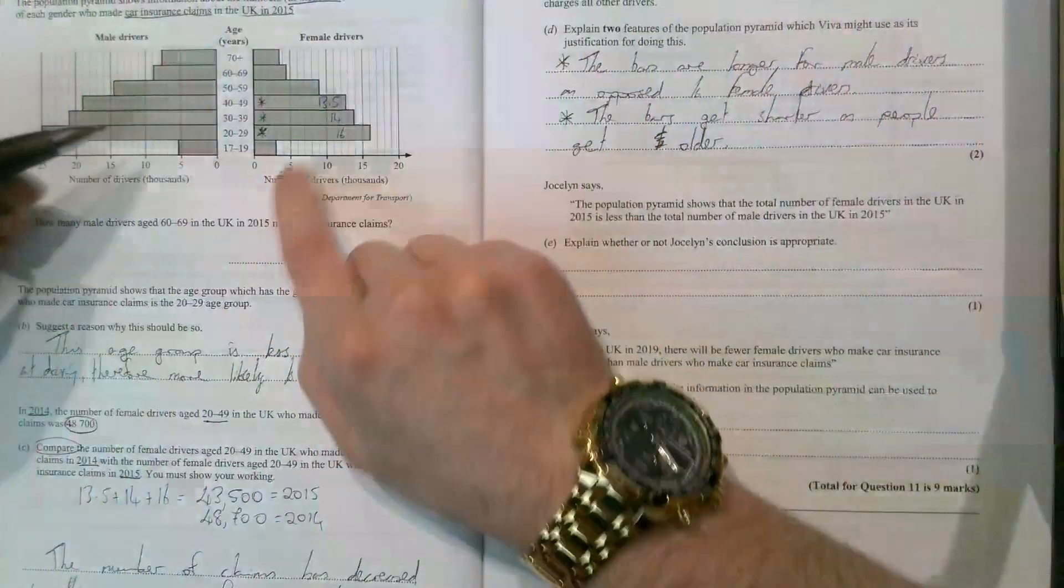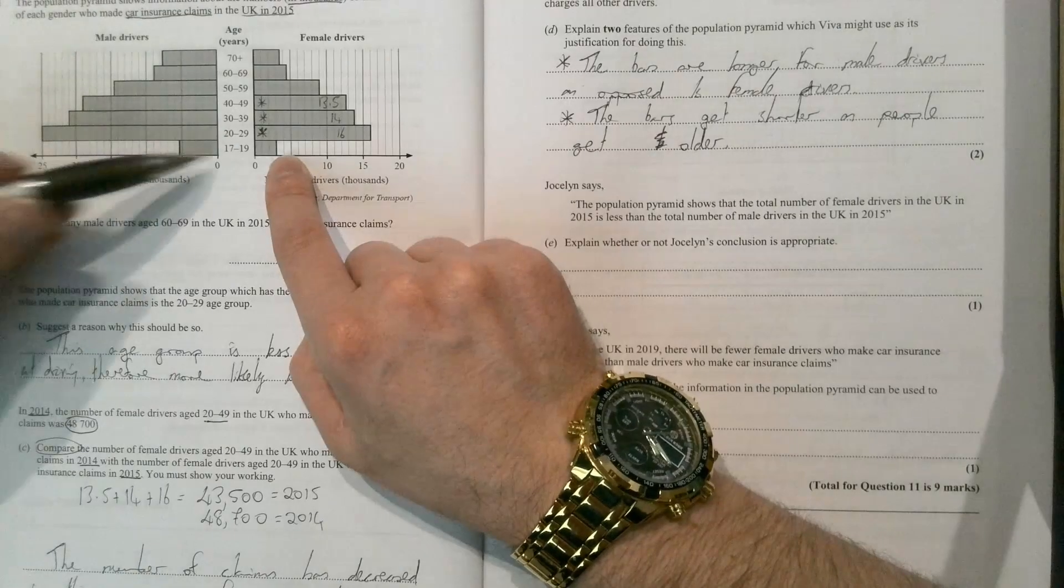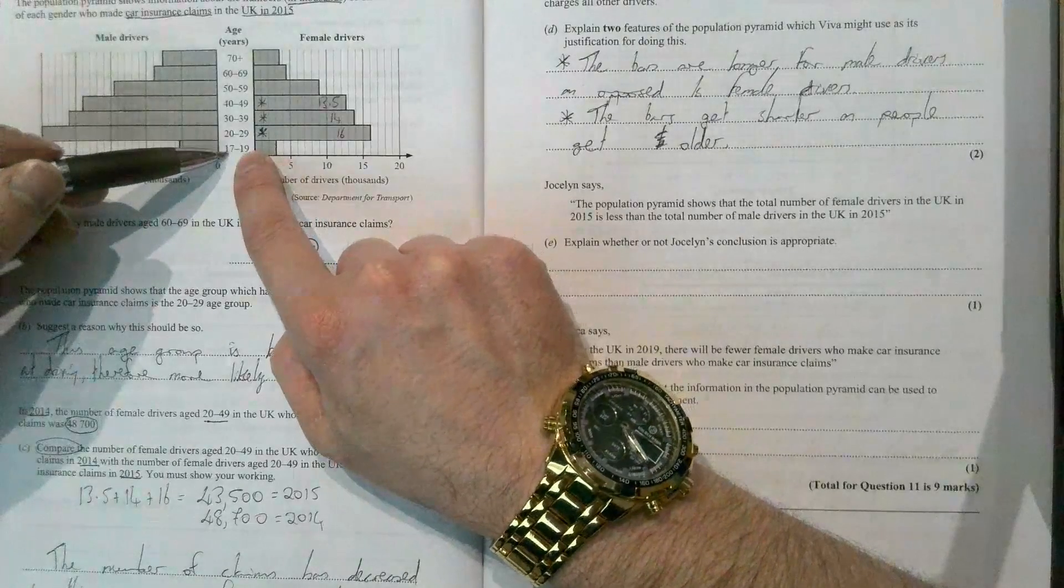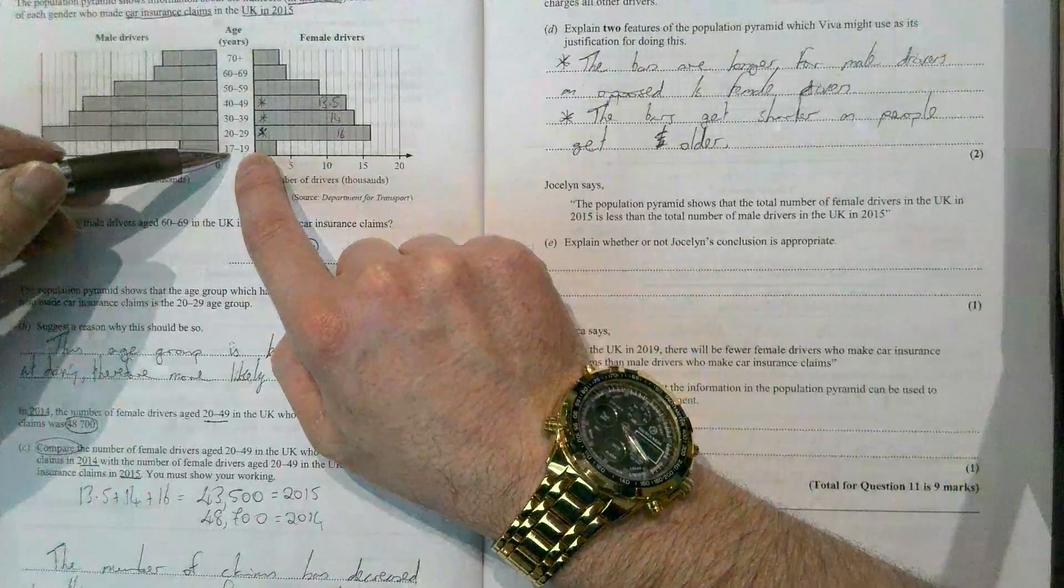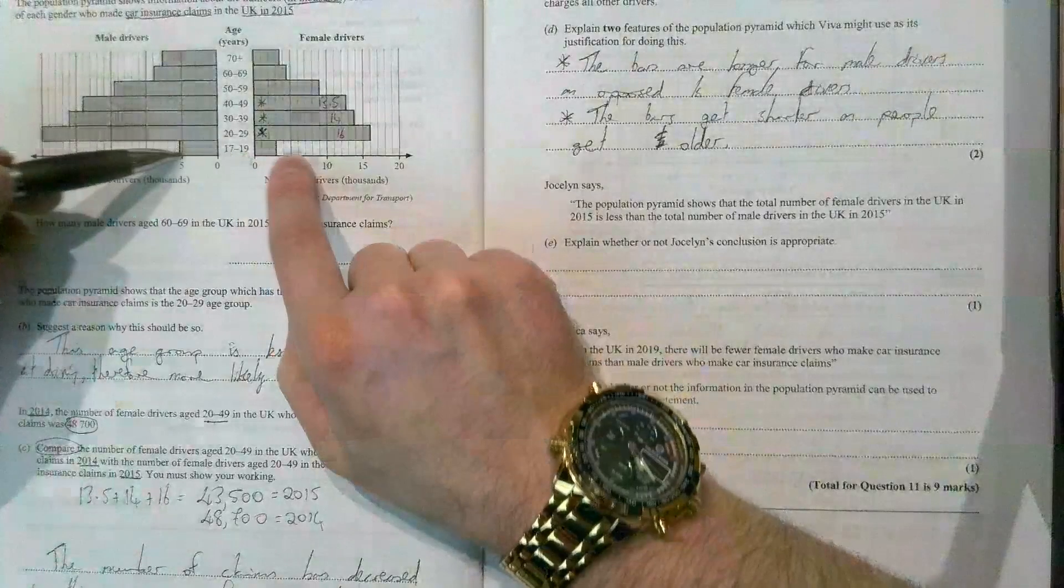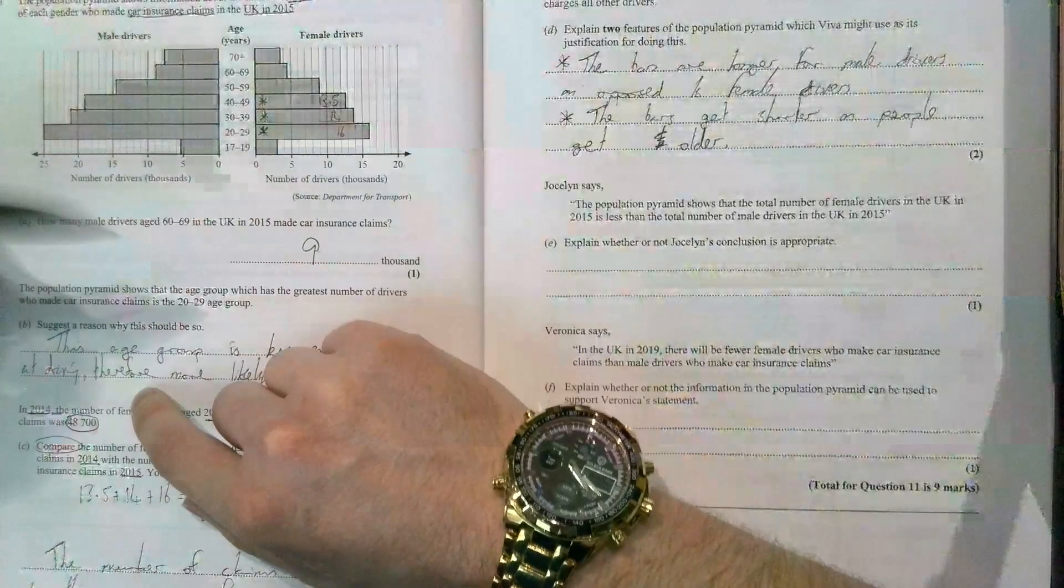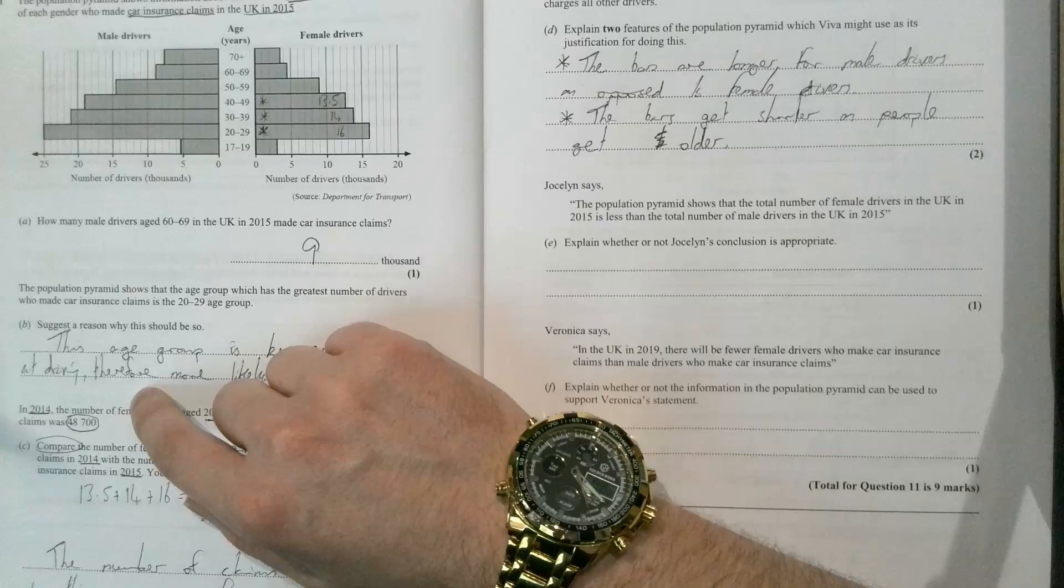Don't read too much into these small bars for the 17 to 19 year olds. What you'll find there is that very few 17 to 19 year olds actually drive, therefore those numbers will be small. Whereas most people in their 20s and 30s do drive—they've passed their tests, they can afford to have a car—but not that many people who are 17 to 19 have their own car.